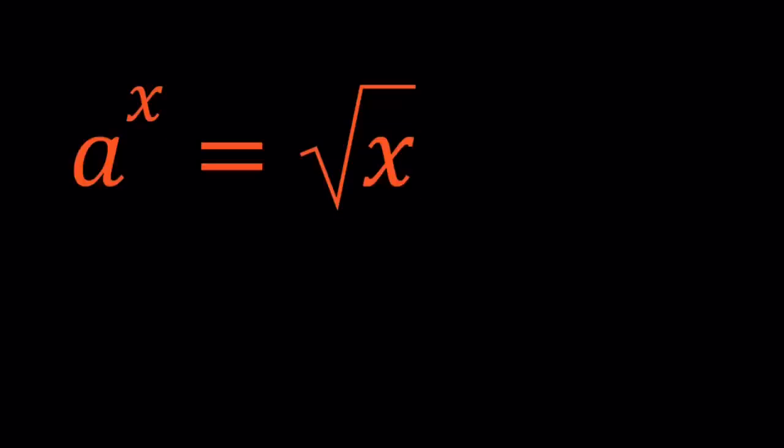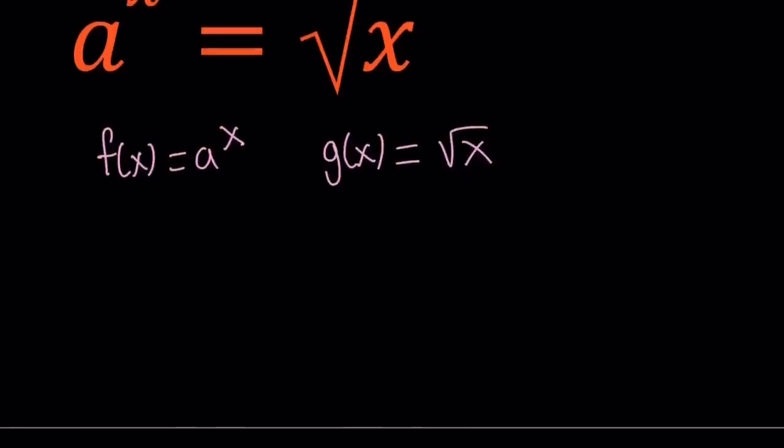So I'm going to show you a couple graphs, but let's go ahead and take a look at the functions first. We have f of x equals a to the power x. Let's designate that. And g of x equals square root of x. So the question is, we want these two functions, the graphs of these two functions, to be tangent to each other.